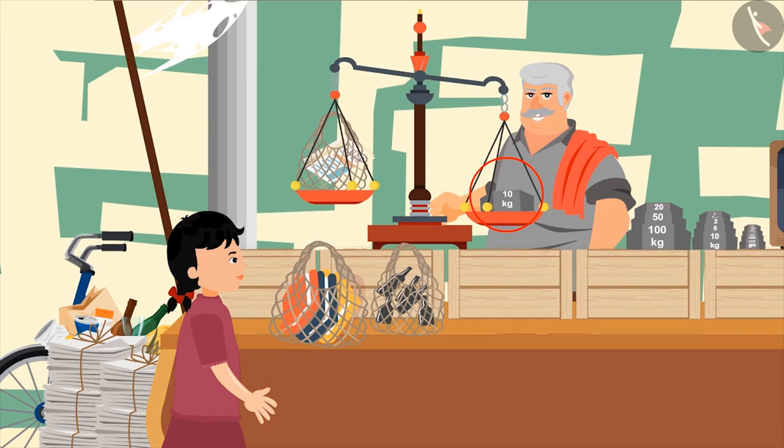Look, the side carrying 10 kg weighing stones moved downwards, while the side carrying the newspapers moved upwards. This means the weight of the newspaper is less than 10 kgs.